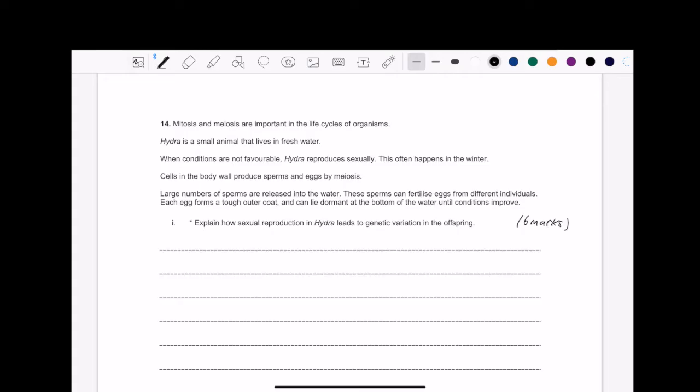So it says, explain how sexual reproduction in Hydra leads to genetic variation of offspring. Let's rephrase this. How does sexual reproduction lead to genetic variation? That's it.